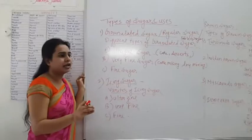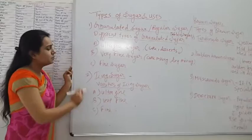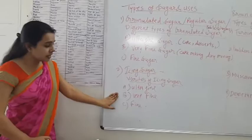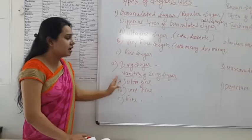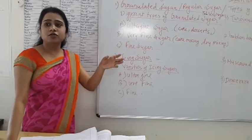We are definitely using icing sugar every time. We have seen the varieties of icing sugar: ultra fine sugar, then very fine sugar, then fine sugar. We have seen three categories of icing sugar. Icing sugar means powder sugar. It will be less fine, then more fine, so we have categorized it.